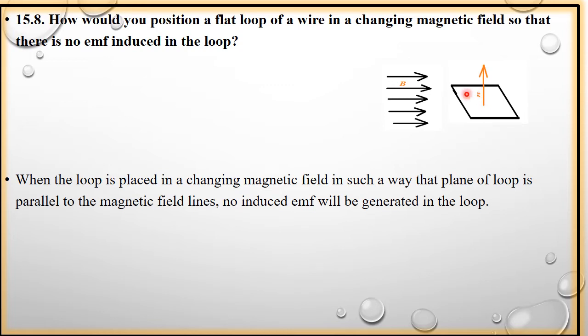tab B aur is ke area vector ke darmiyaan 90 ka angle banta hai. Aur is waqt flux zero ho jata hai. But yahan flux kyunke zero hai, is tarah jo EMF hai, wo depend karti hai rate of change of flux per. Is tarah se, yahan flux bhi zero, EMF bhi zero. So, when the loop is placed in a changing magnetic field in such a way that plane of loop is parallel to the magnetic field lines, no induced EMF will be generated in the loop.